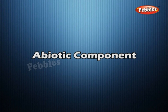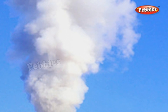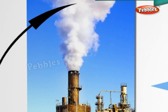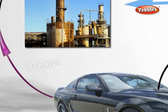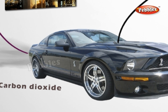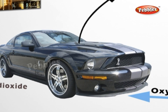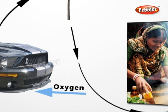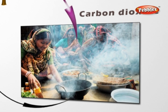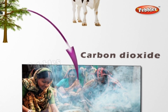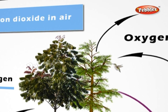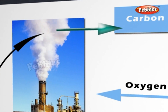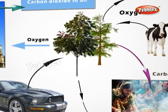All living organisms take in oxygen and give out carbon dioxide all the time. Oxygen is used up and carbon dioxide is given out during burning. However, the composition of air still remains more or less constant. This happens because green plants take in carbon dioxide and give out oxygen during photosynthesis. Thus, a balance is maintained between carbon dioxide and oxygen in the air.